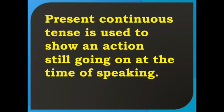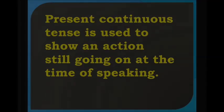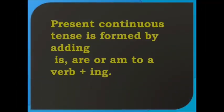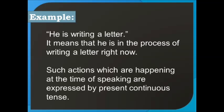Present continuous tense is used to show an action still going on at the time of speaking. For example, I'm speaking and you are listening. Present continuous tense is formed by adding is, are, or am to a verb plus ing. For example, he is writing a letter — it means he is in the process of writing a letter right now. Such actions happening at the time of speaking are expressed by present continuous tense.